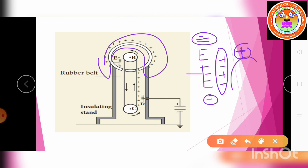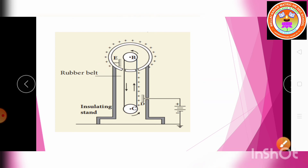Comb E, having negative charge, attracts the positive charges and repels the negative charges. The negative charges move to the belt and neutralize the positive charges already on it, so the descending belt carries no net charge.